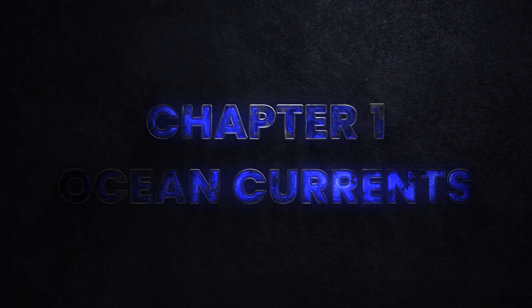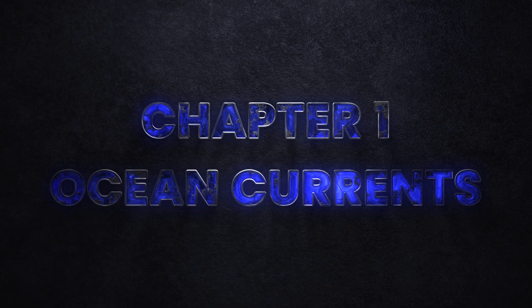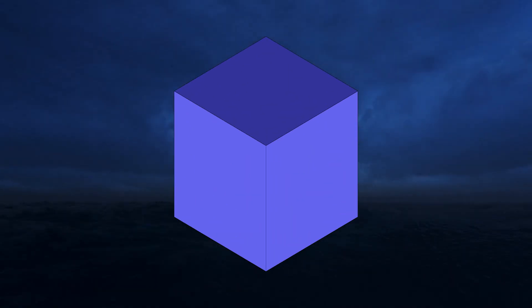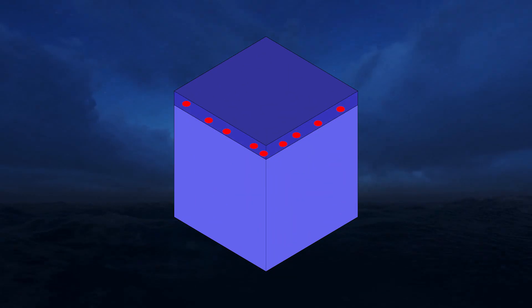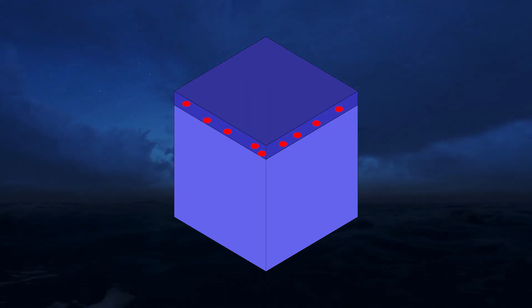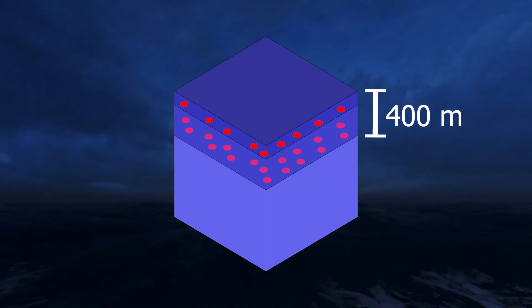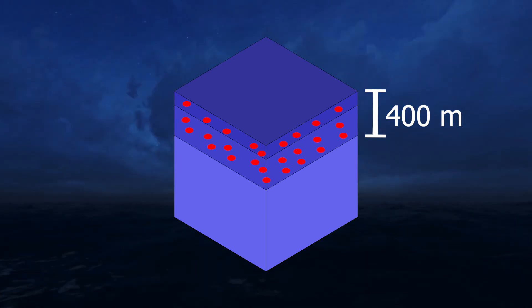Ocean currents can generally be split up into two distinct categories, each one having different causes for movement, and both play a vital part in explaining how this underwater waterfall is created. The most obvious cause for ocean currents is the wind, which sets the very top layer of the ocean into motion. This movement then pulls in the underlying layers of water molecules, setting even more water mass into motion. These pulling forces are transferred down to a depth of up to 400 meters.